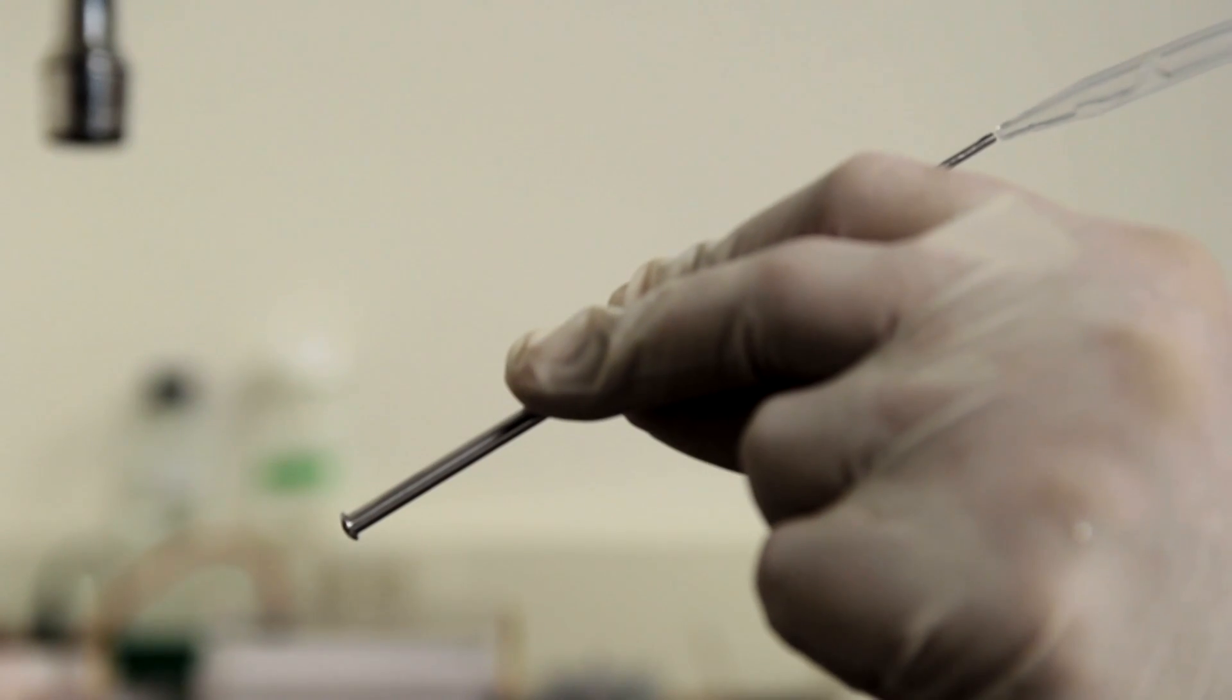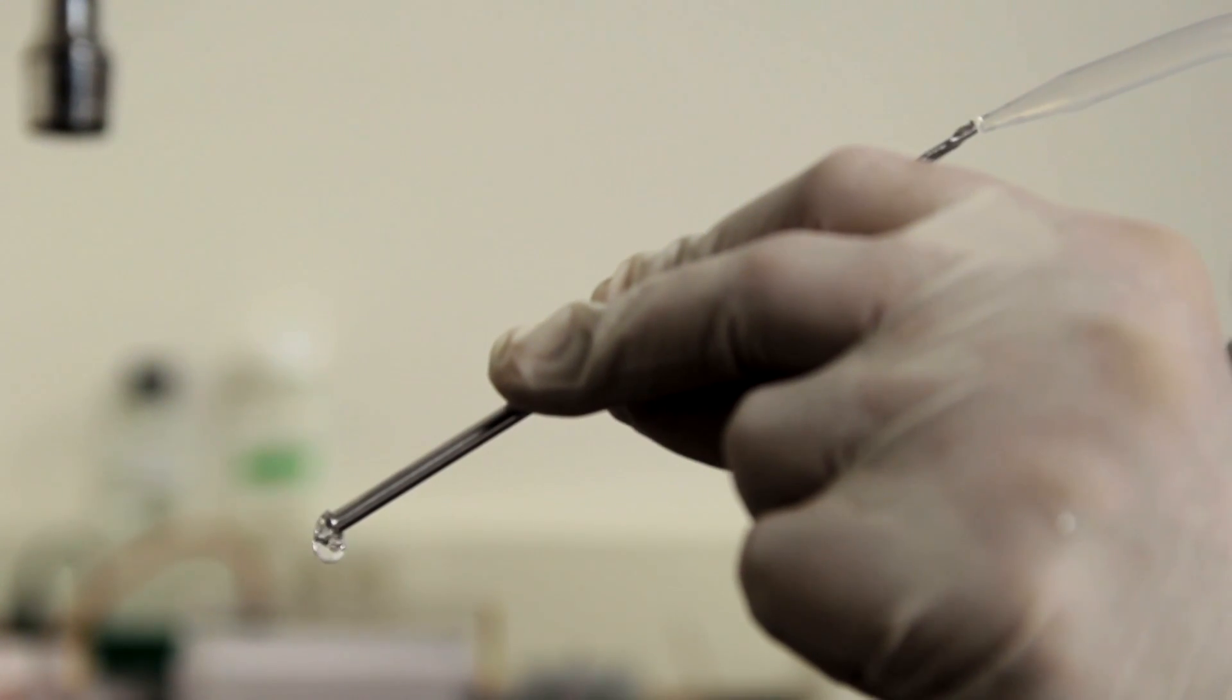Needle cleaning is quite simple. First, let's make sure the needle is not clogged. Using a syringe or squeeze bottle, flush the needle with distilled water from the narrow end.